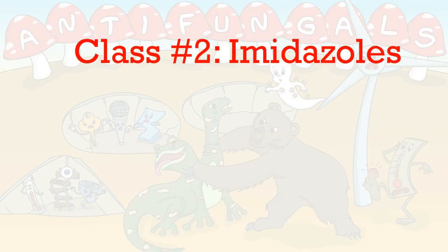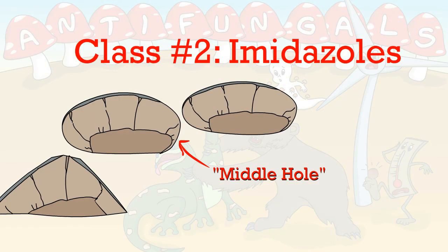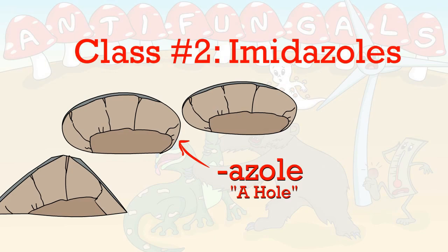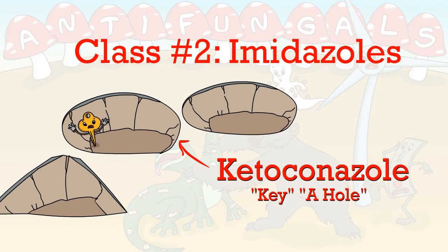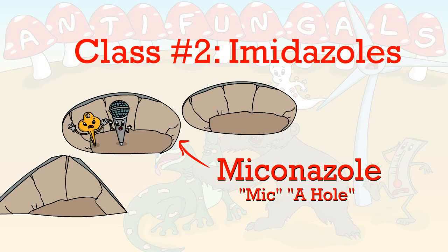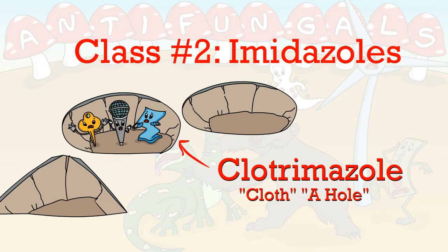Next up are the imidazoles, represented by the middle hole. These drugs end in -azole, which sounds similar to a-hole. The key is ketoconazole, the microphone is miconazole, and the cloth is clotrimazole.